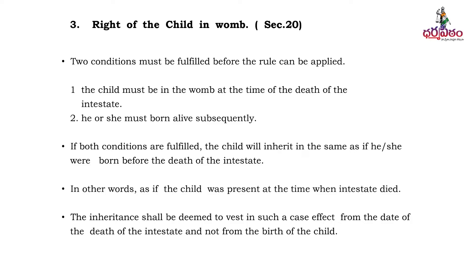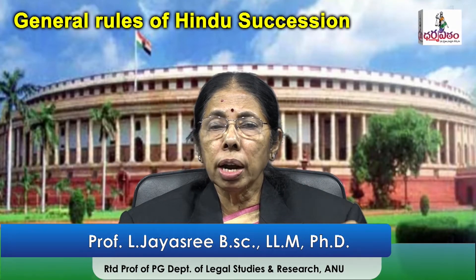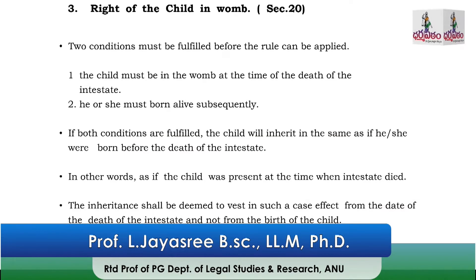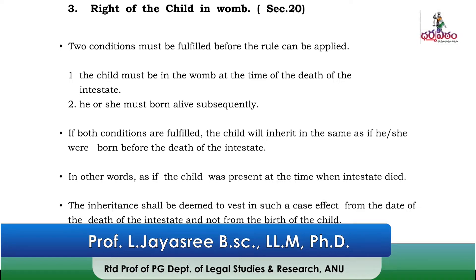Let us go to Section 20. Section 20 speaks about the rights of the child in the womb. Under Section 20, there are two conditions required. Number one is the child must be in the womb at the time of the death of the intestate.